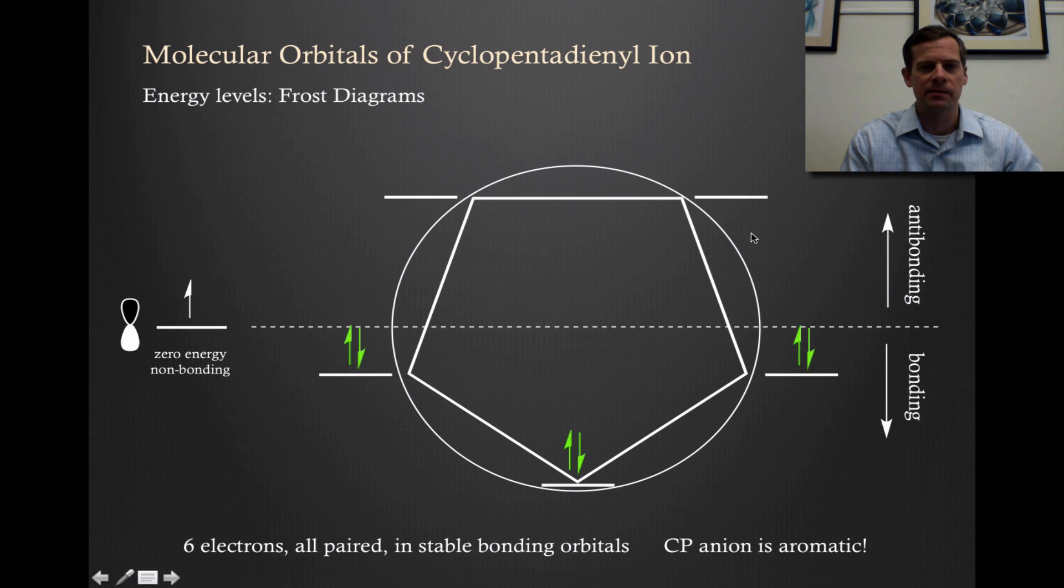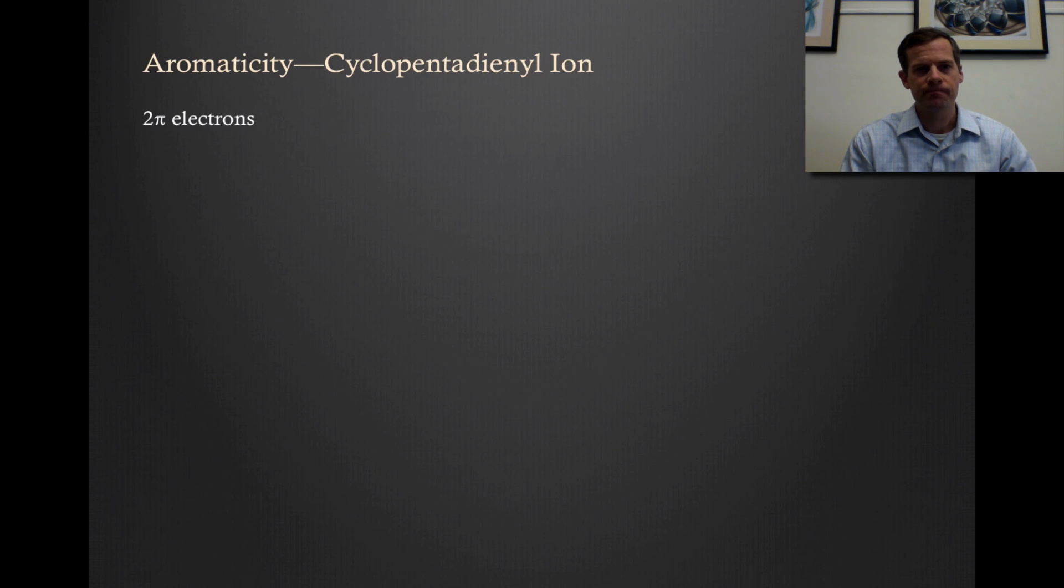If we look at the Frost diagram of cyclopentadienyl anion, in this case we're building up five molecular orbitals. Here's our circle and we inscribe a regular pentagon. We still have the six pi electrons, and so the first two go into the lowest energy orbital and then the next four go into that degenerate pair of molecular orbitals. You can see all the molecular orbitals are in the bonding portion of this diagram and they're all paired up. So cyclopentadienyl anion, which is often called CP, is aromatic.